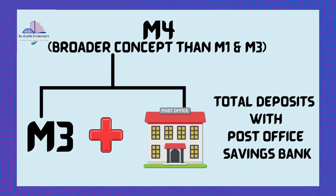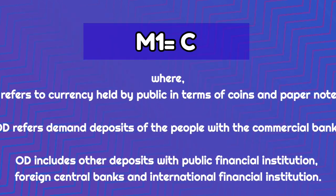The last measure of money supply is M4, which is a broader concept compared to both M1 and M3. It includes M3 plus the total deposits with the post office savings bank, but does not include national savings certificates — a fixed income investment scheme that can be opened at any post office branch.